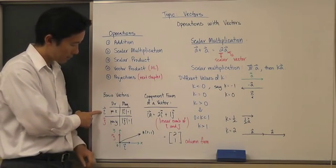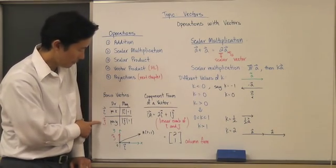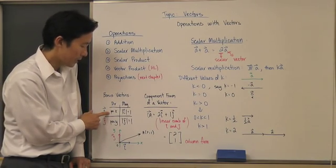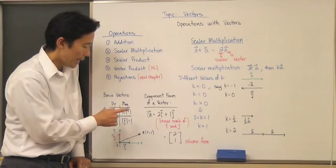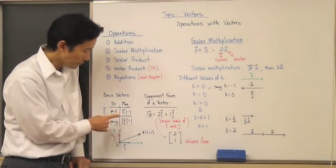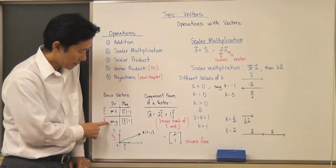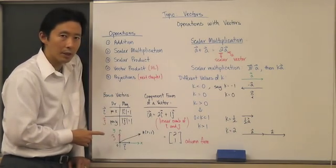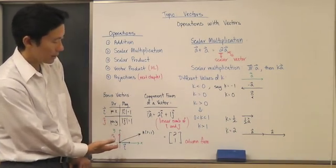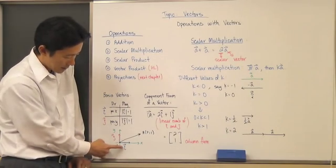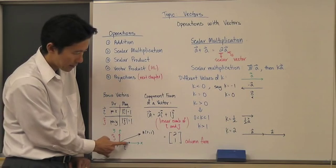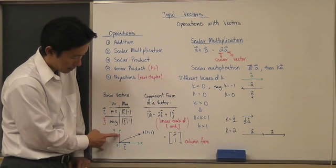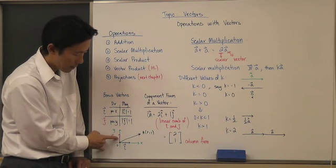In two-dimensional space, we have two basis vectors: the i vector and the j vector. The i vector has a direction in the positive x-axis direction and a magnitude of one. The j vector has a direction in the positive y direction and also a magnitude of one. On the x-y coordinate plane, here is the i vector in the positive x direction with magnitude 1, and here is the j vector in the positive y-axis direction, also with magnitude 1.